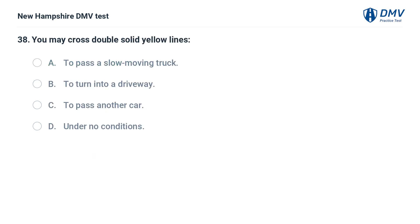You may cross double solid yellow lines: A) to pass a slow-moving truck, B) to turn into a driveway, C) to pass another car, D) under no conditions.